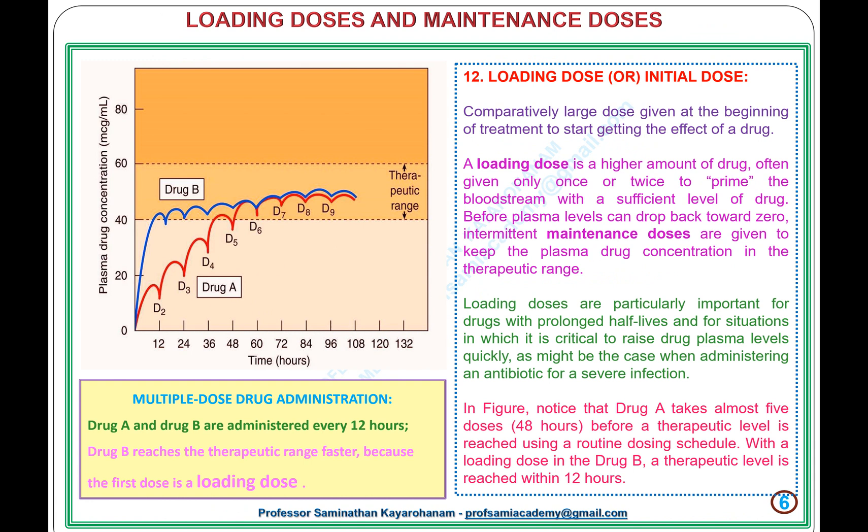12. Loading Dose or Initial Dose: comparatively large doses are given at the beginning of treatment to start getting the effect of a drug. A loading dose is a higher amount of drug, often given only once or twice, to prime the bloodstream with a sufficient level. Before plasma levels drop back toward zero, intermittent maintenance doses are given to keep the plasma drug concentration in the therapeutic range. Loading doses are particularly important for drugs with prolonged half-lives, or when it is critical to raise drug plasma levels quickly, as when administering an antibiotic for a severe infection.